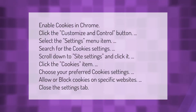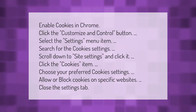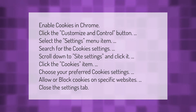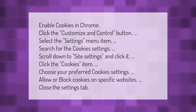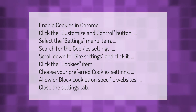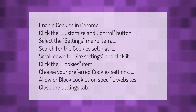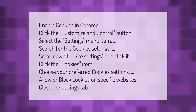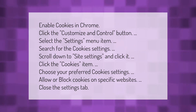Let's help you make your mark. To enable cookies in Chrome, click the Customize and Control button and select the Settings menu item. Search for the cookie settings, scroll down to Site Settings and click it. Click the Cookies item, choose your preferred cookie settings to allow or block cookies on specific websites, then close the settings tab.